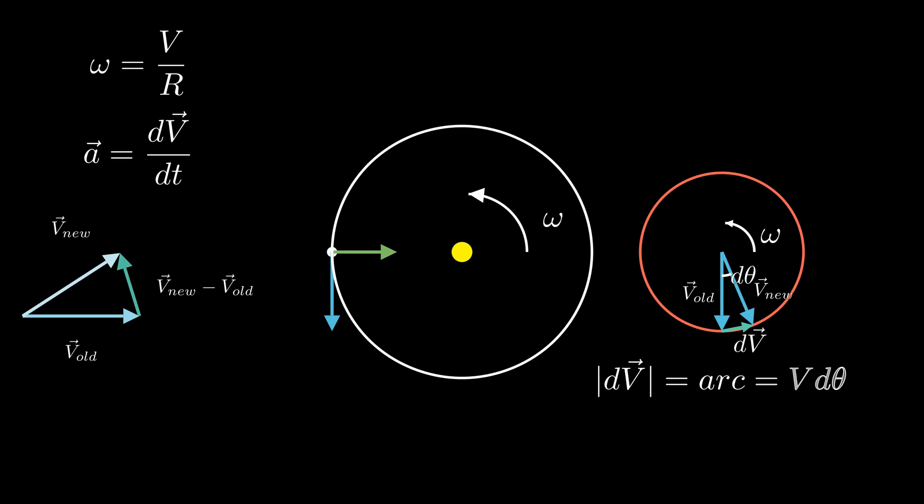Now, let's find the size of our acceleration vector, which can be found by dividing dv over dt and finding its length. Here, we can substitute v d theta and you may notice that there is d theta over dt now. If you remember, that is actually the angular velocity. And we can substitute the angular velocity to be v over r. So, when you substitute that into the acceleration, we get v squared over r.